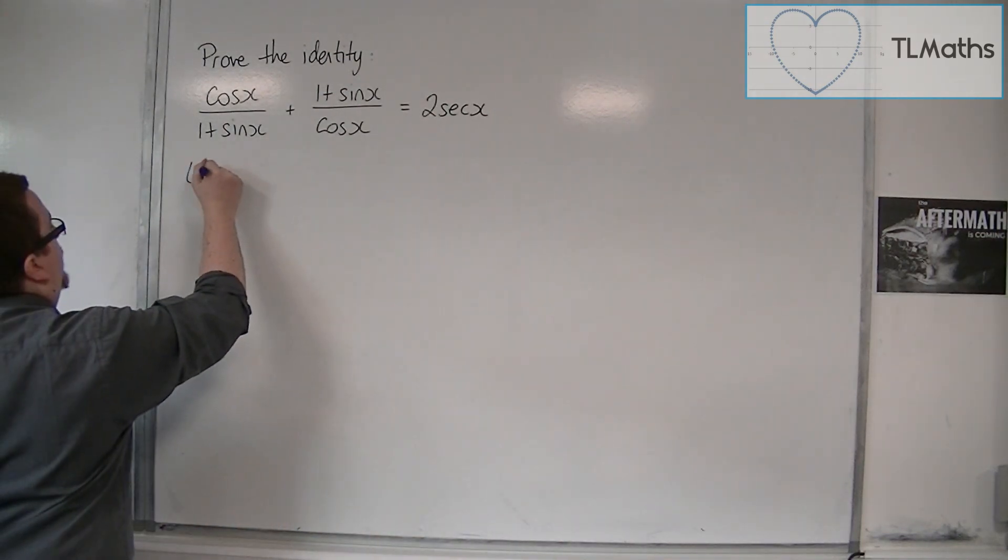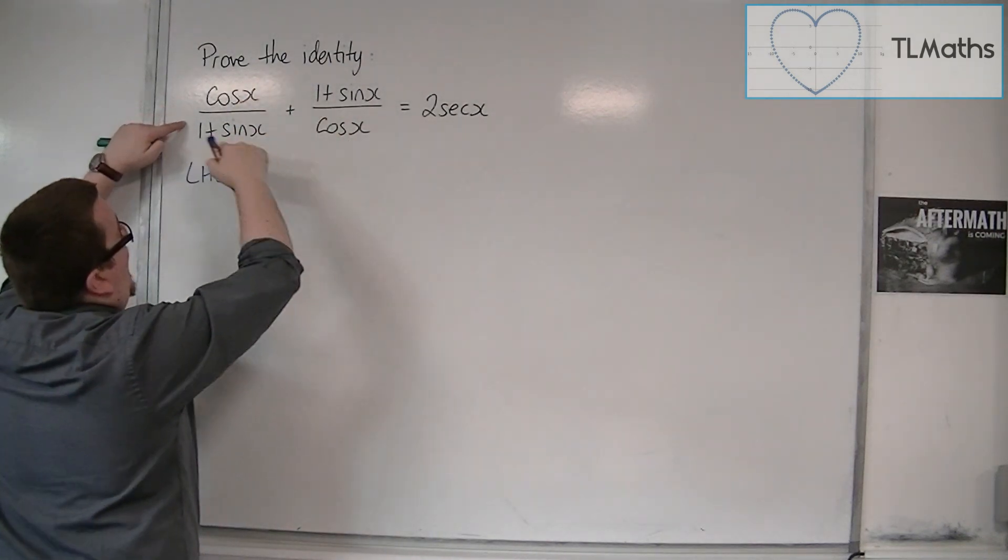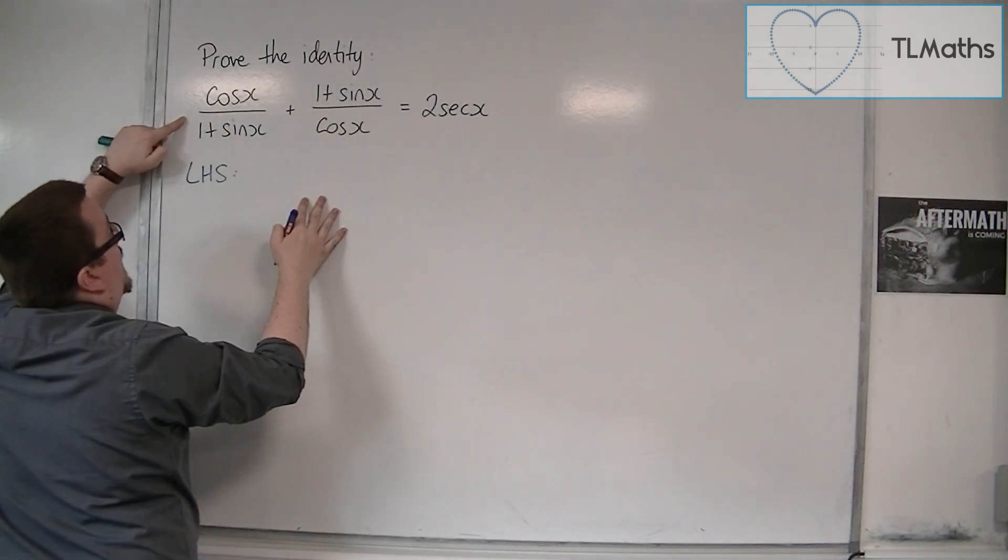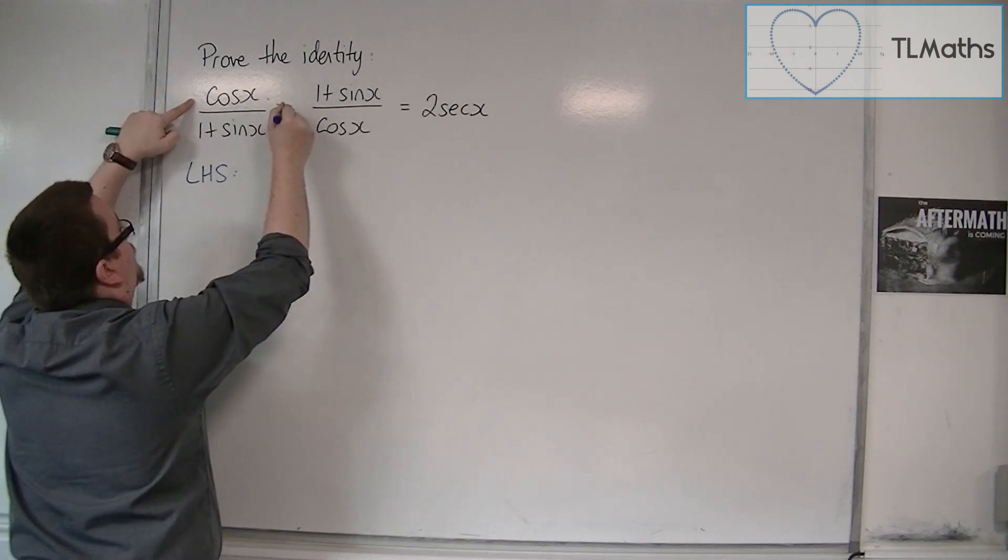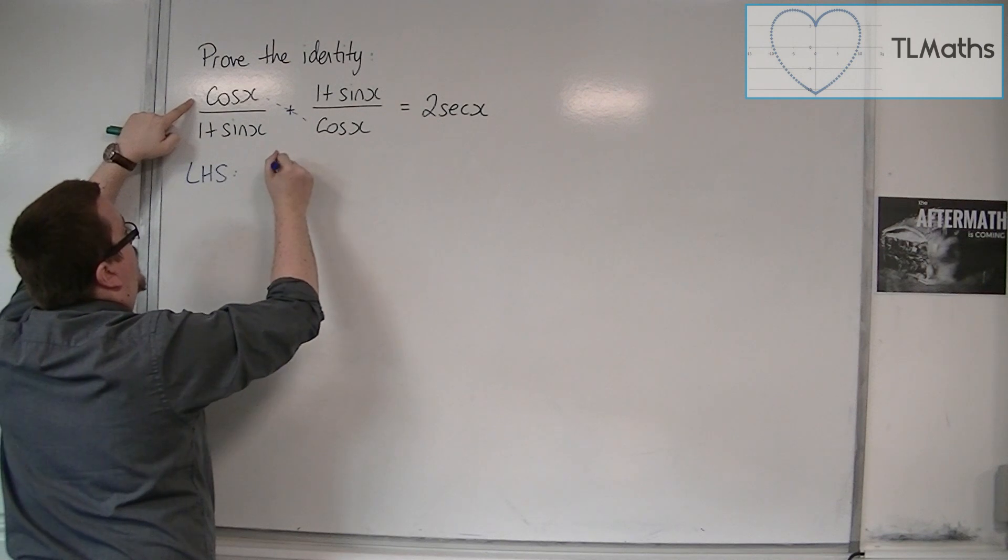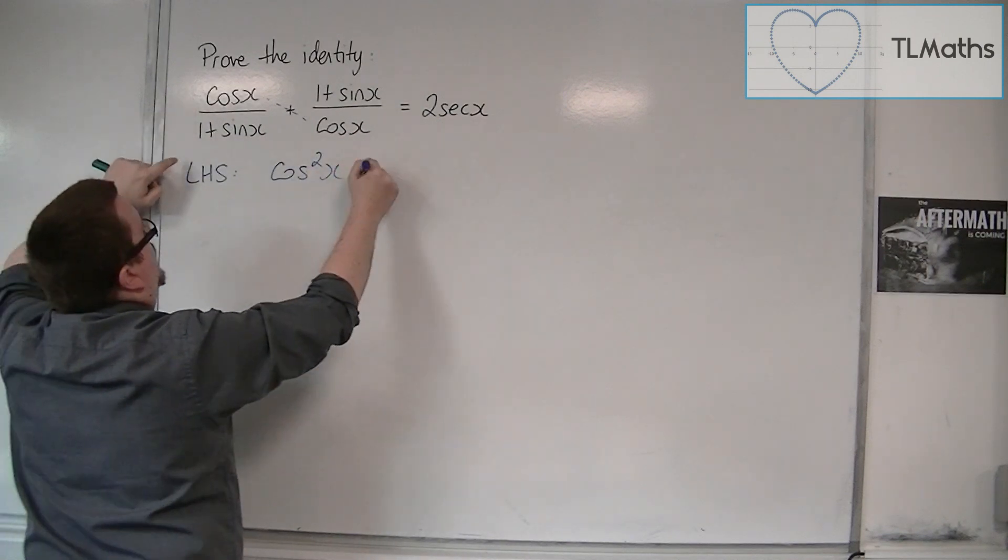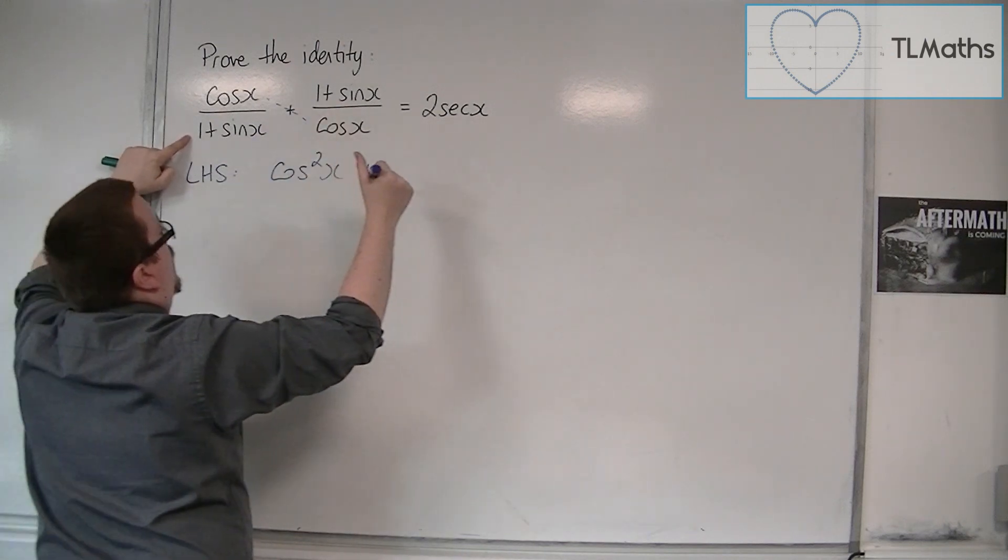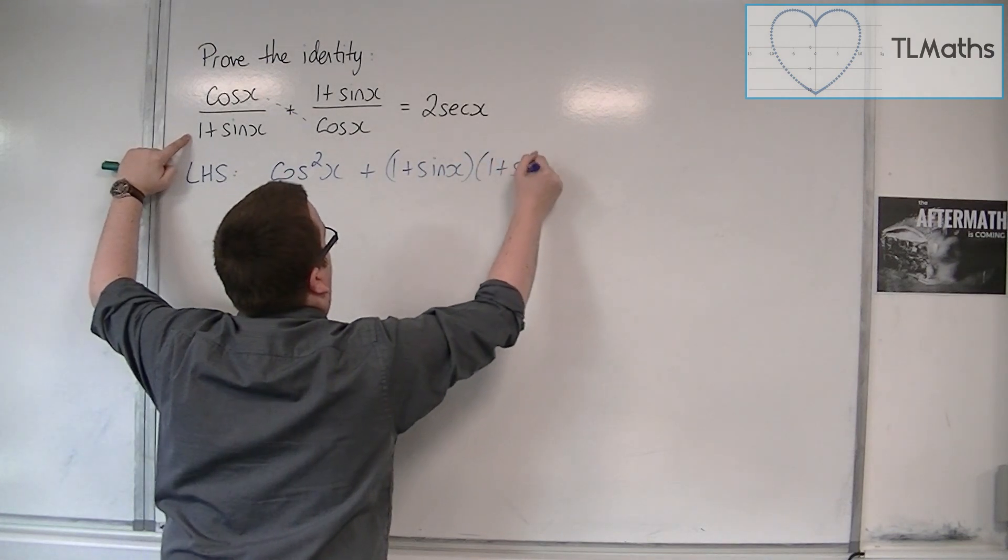Starting with the left-hand side, what I'm going to do is add these two fractions together. I'm going to use cross multiplication. Cos x times cos x will make cos squared x. And then I've got 1 plus sin x times 1 plus sin x.